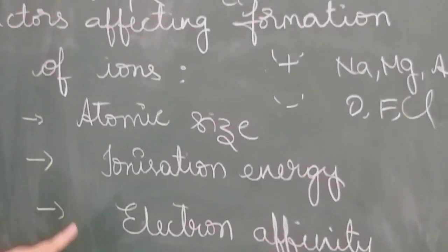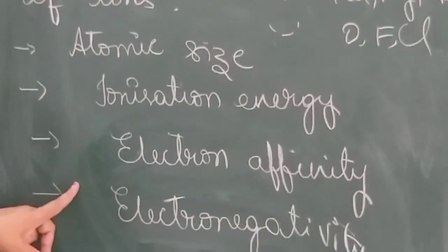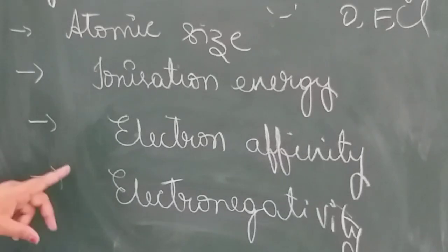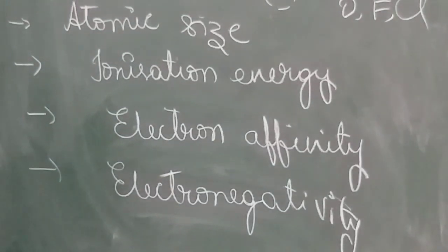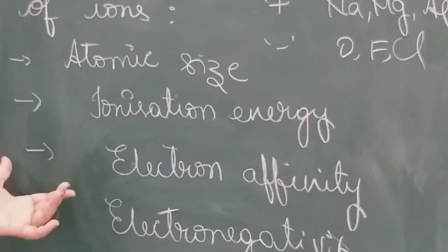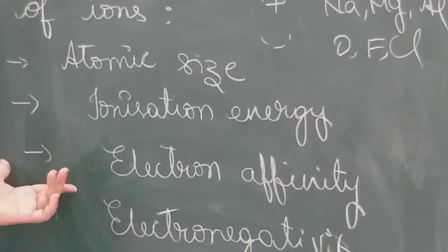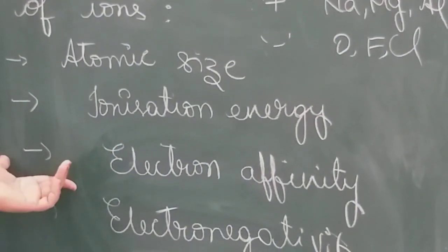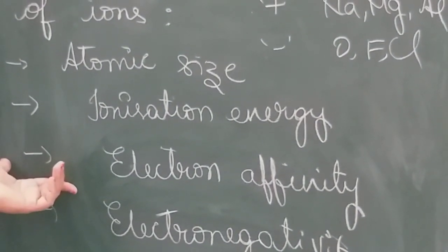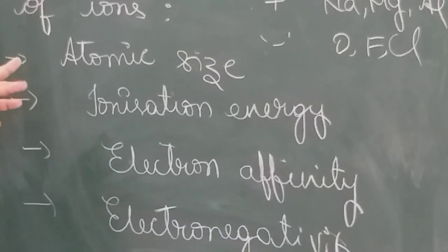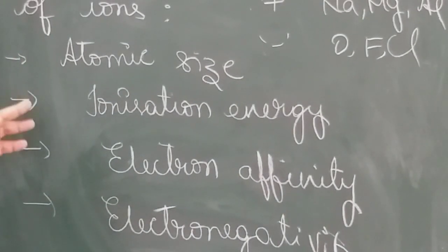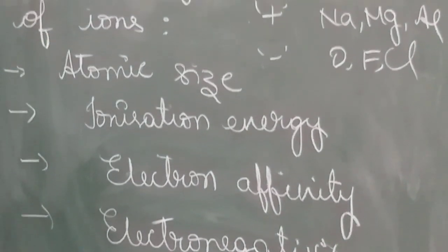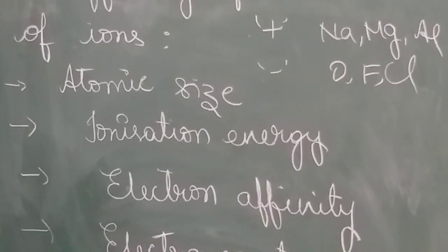These four are the main factors affecting the formation of ions. For metals, ionization energy and electron affinity are very low, which is why they lose electrons easily and form cations.